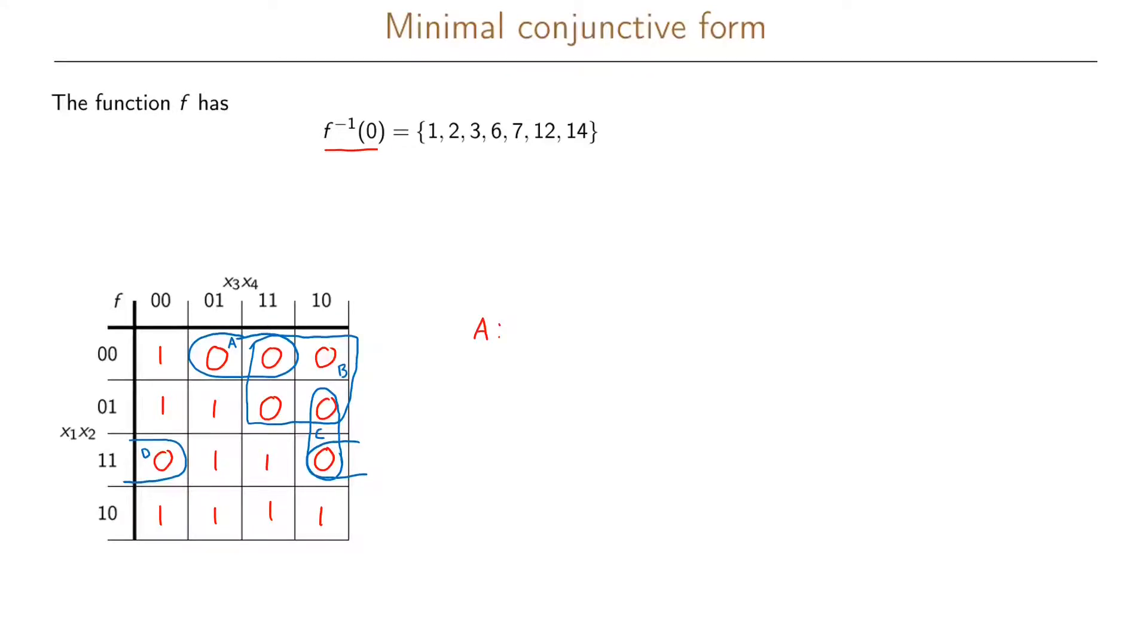We have A which is x1 prime, x2 prime, and x4. And since we have zeros in our Karnaugh table here we will write this with a prime. And this can using De Morgan's law be written as x1 or x2 or x4 prime.